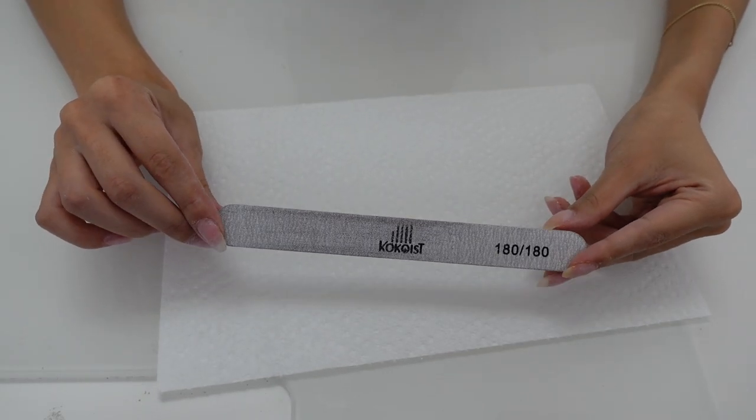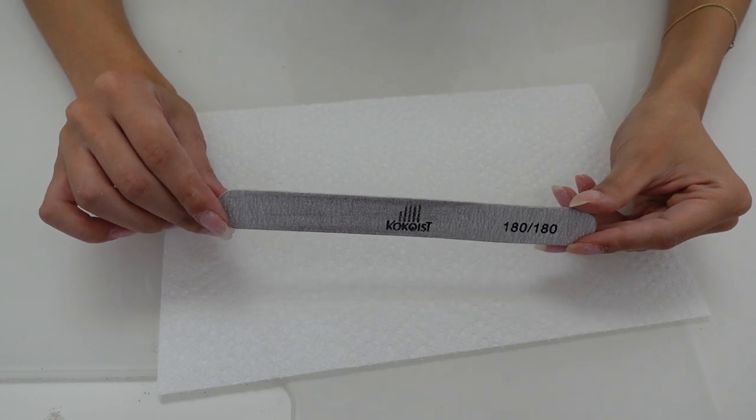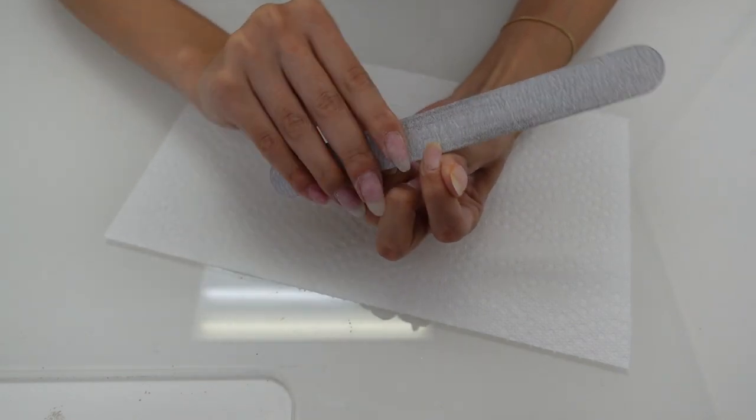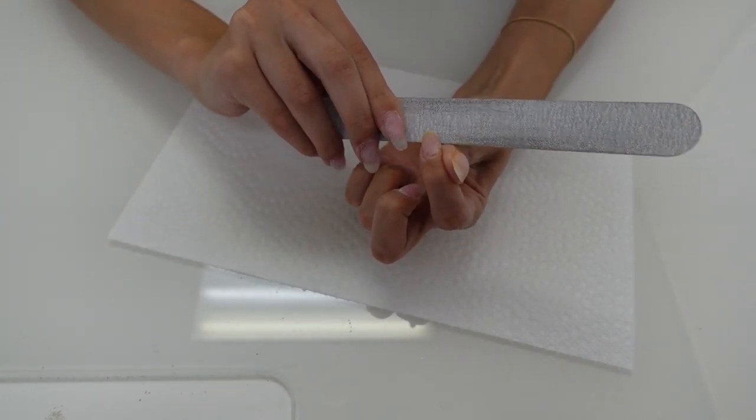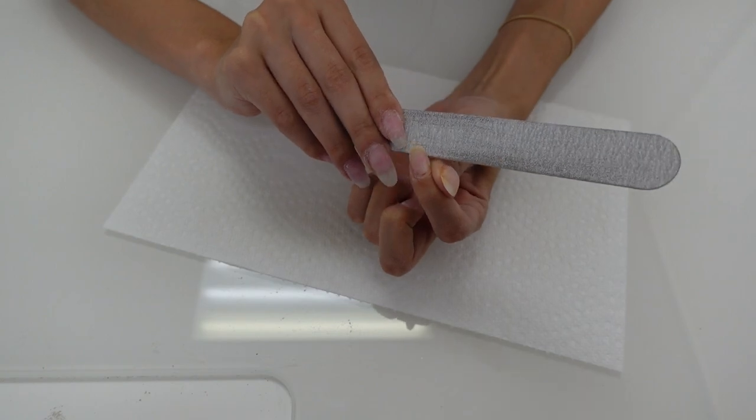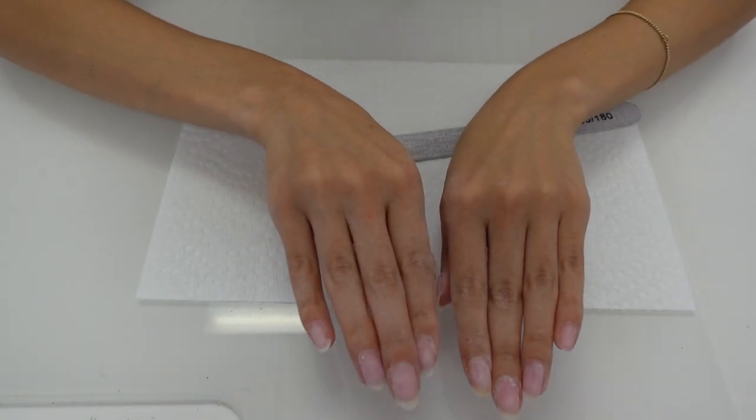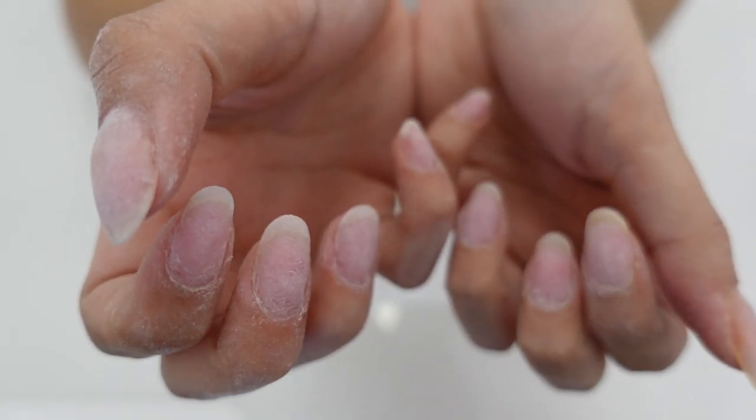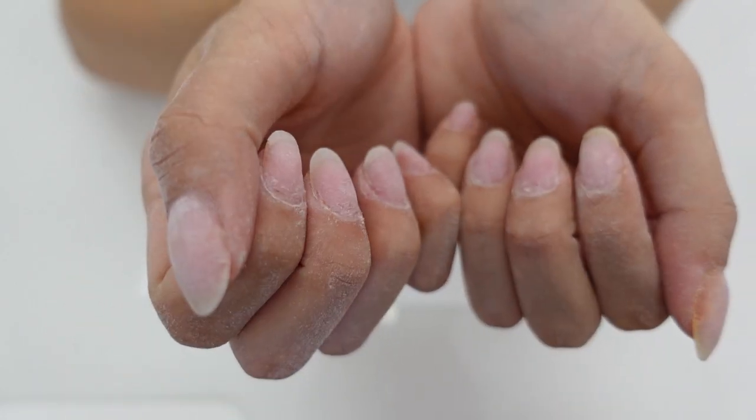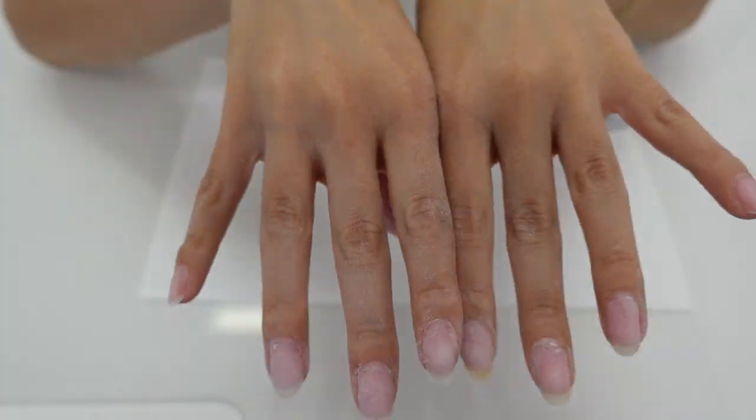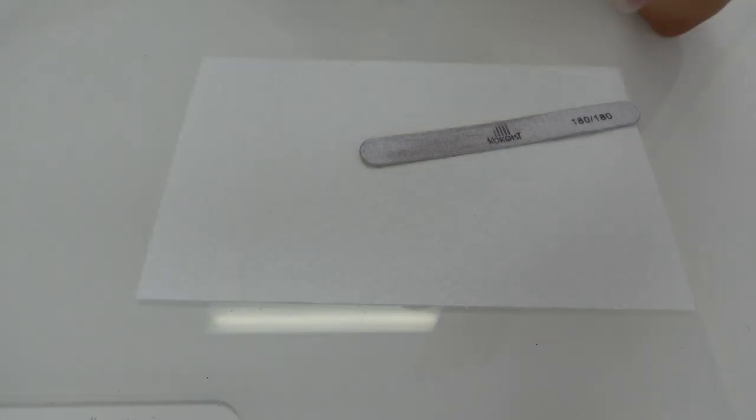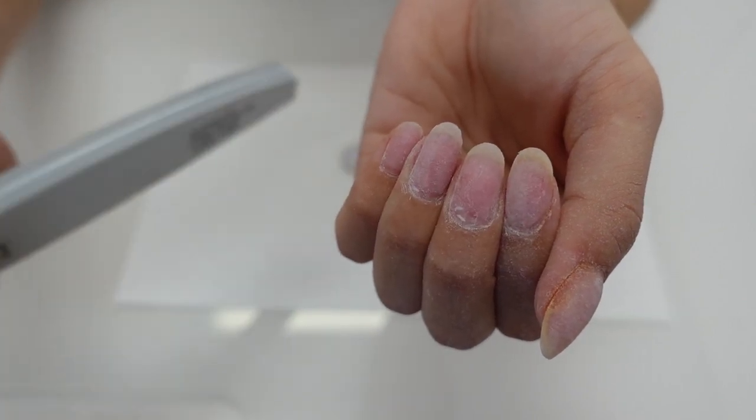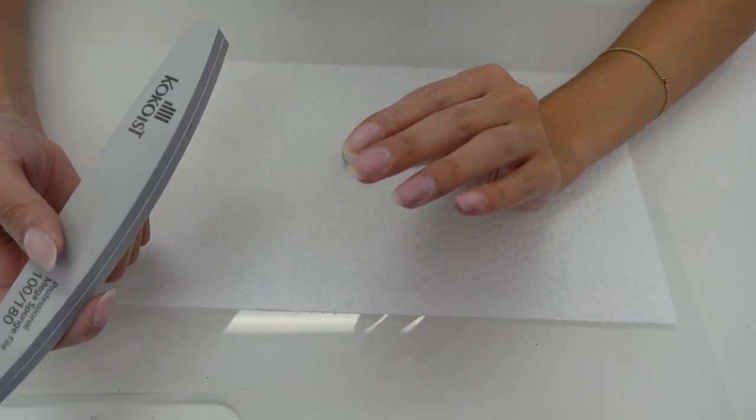I'm going to take my Emory board right here and I'm just going to shape my nails with this. I'm going for a rounded shape here. So now I'm going to go through with my sponge buffer and I'm just going to smooth out the roughness on my nails.